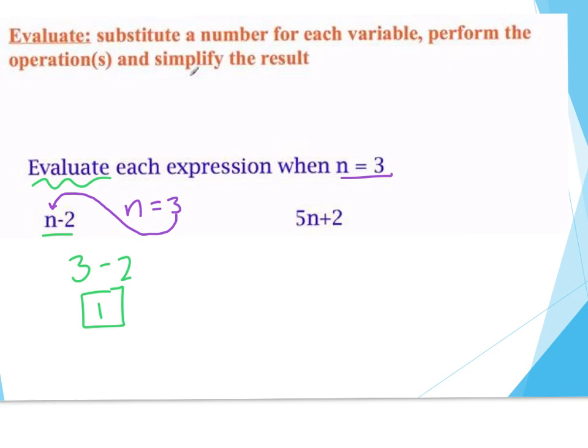Let's try a second one: 5n plus 2. I'm going to take n equals 3 and replace n with 3. Do I write it as 53 plus 2 — literally replacing it in there? What does 5n really mean? When you write a number next to a variable, that means multiplication. So 5n plus 2 really means 5 times 3 plus 2. Now, where do I start? Do I do 3 plus 2 or 5 times 3 first? That leads us to order of operations — we'll save the simplification for that section.